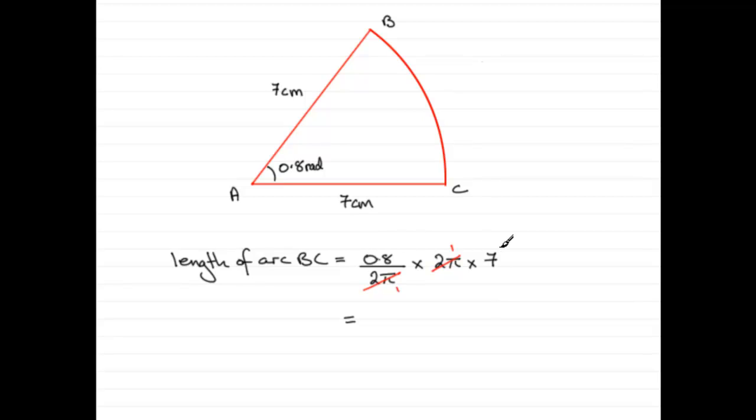So working this out, you don't have to be in radians mode by the way if you're using your calculator. Just do 0.8 times 7, and that gives you 5.6 centimeters.